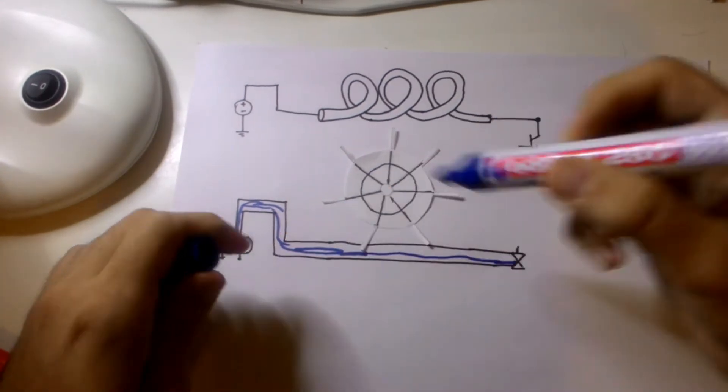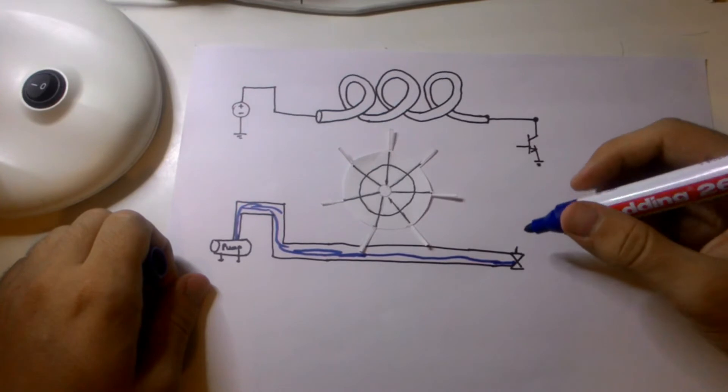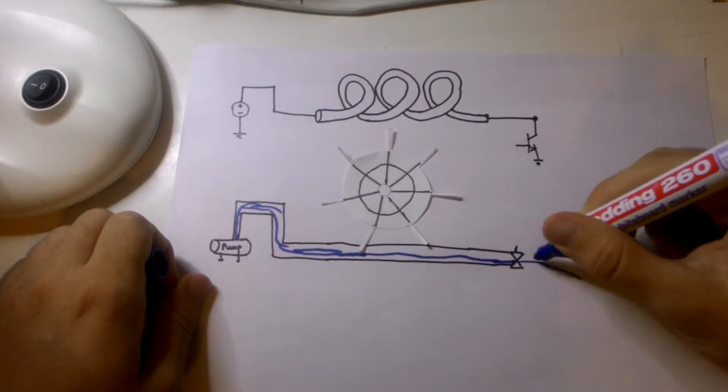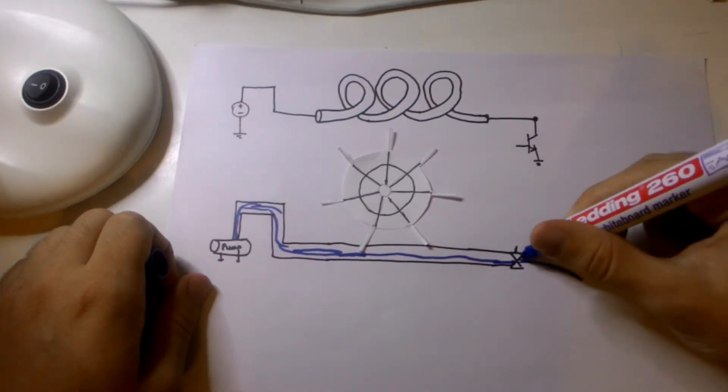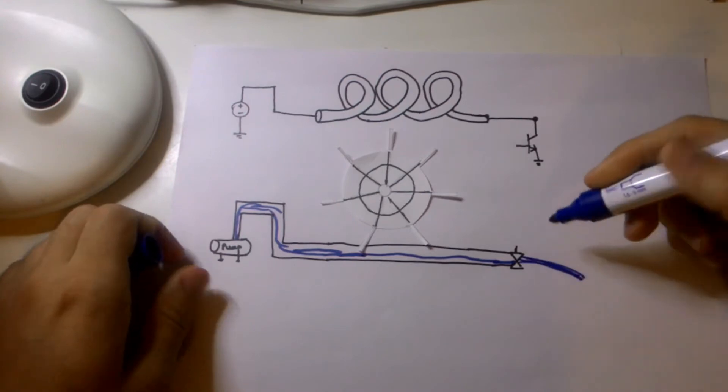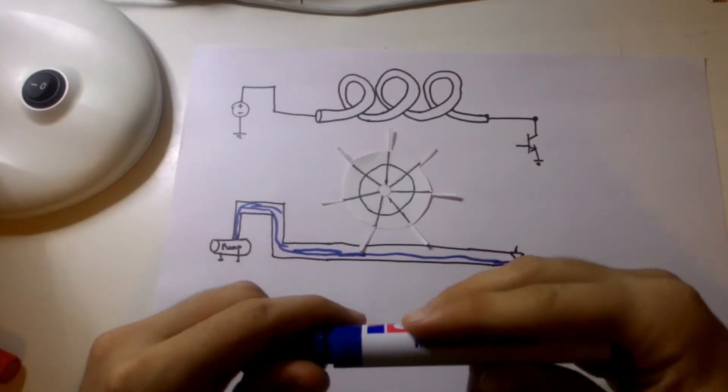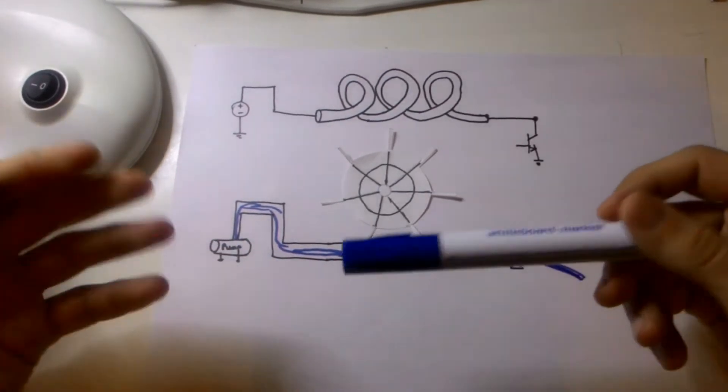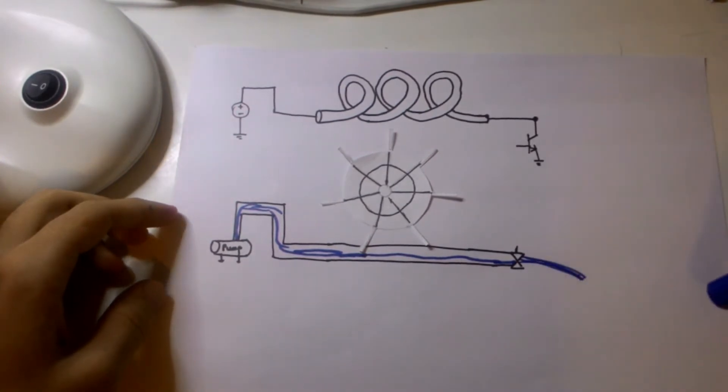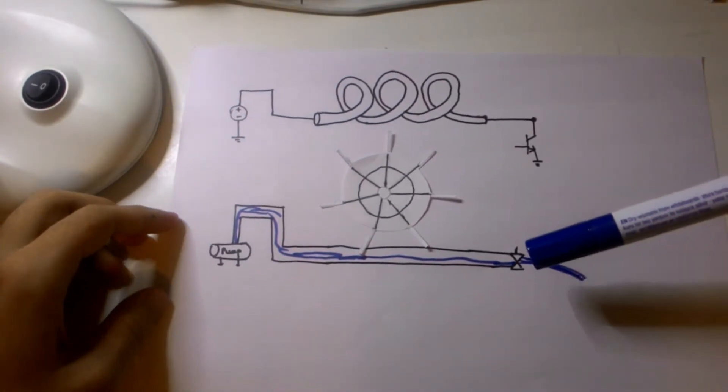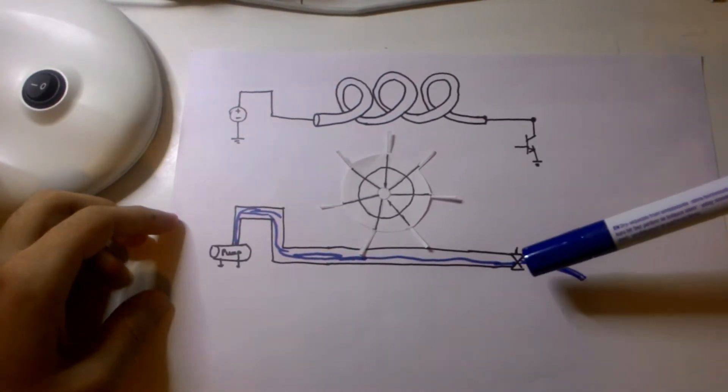Initially my valve is in open state so the water will just flow freely from here. And while my hydraulic circuit is in this state, what's gonna happen if I just suddenly shut the valve off?